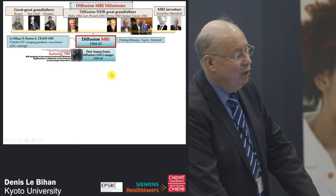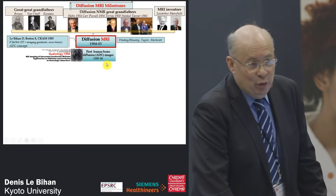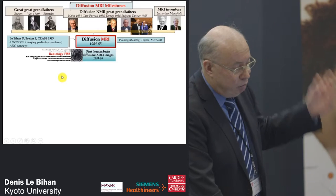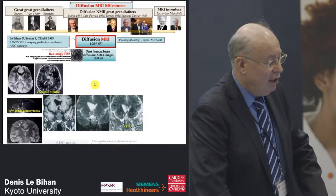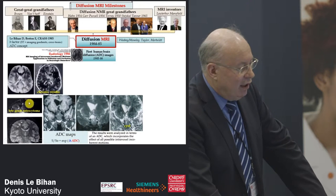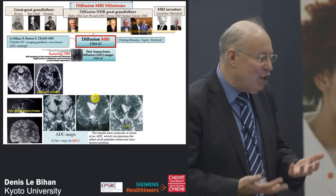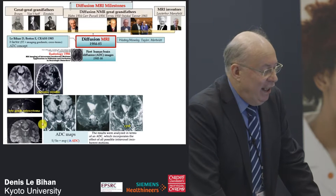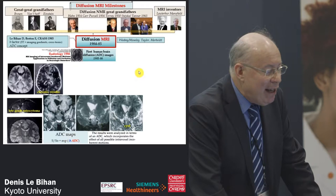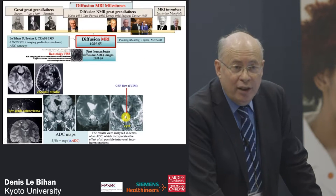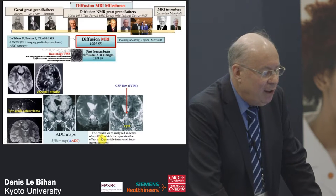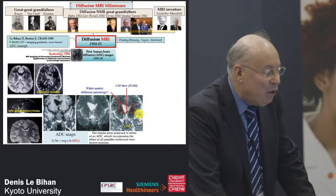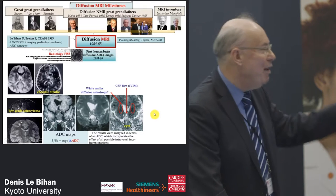At the same time we showed it was possible to get diffusion images in the human brain. This was published in Radiology in 1986 — cited two or three thousand times. The images were the first diffusion images of the human brain, and we could see things you could not see with T2 or T1. We used ADC maps; there were features like CSF flow, which is not diffusion — that's why we also call it ADC, because we were sensitive to other effects. It might be that anisotropy was present but we completely missed it at that time.